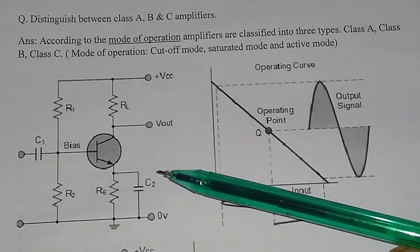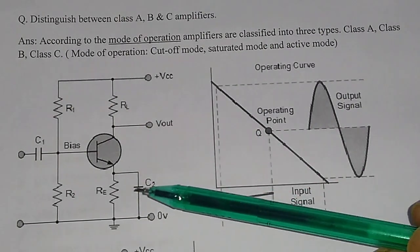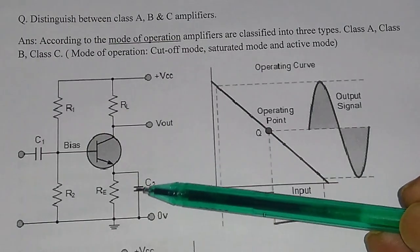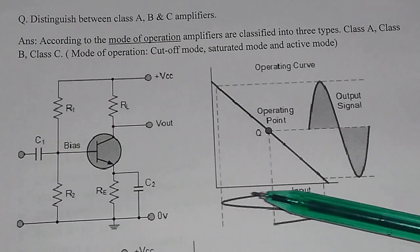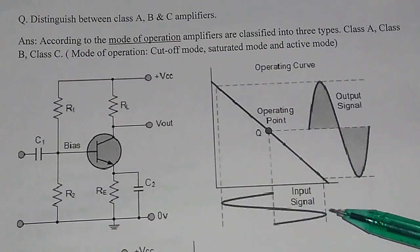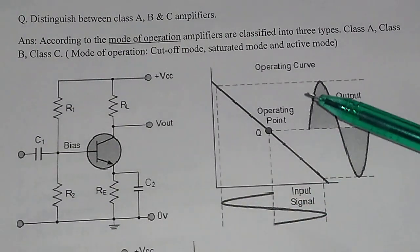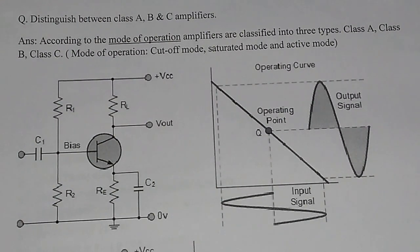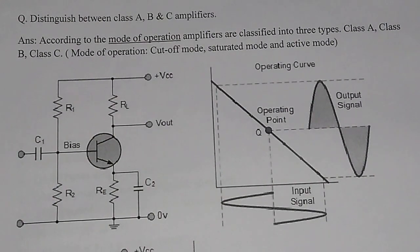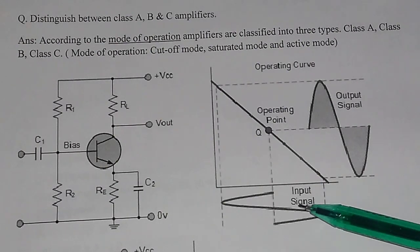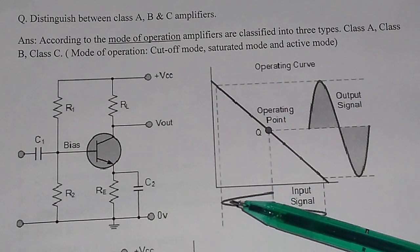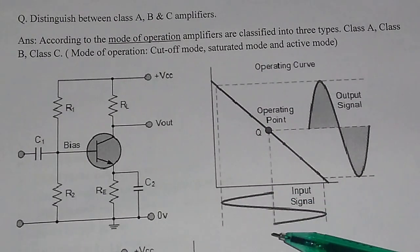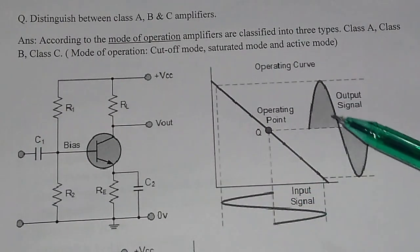This is the basic circuit diagram of a class A amplifier. In the class A amplifier, you see this is the input signal given at the input, and this is the output signal. In class A operation, the collector current flows for the full cycle of the input AC signal, and in the output you also get the full cycle of the AC signal.